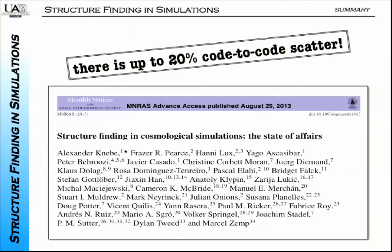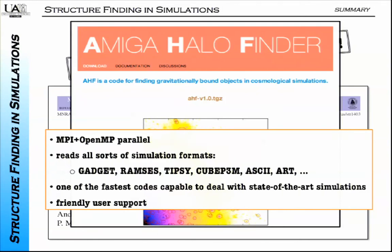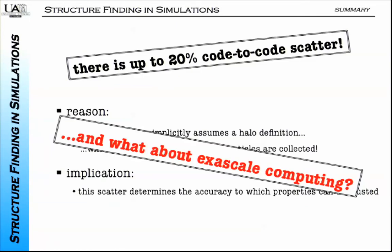You might ask again, which is the right one? Let me finish by saying I'm also a player in this game—I have my own halo finder. It is a publicly open-source, OpenMPI, MPI-parallelized halo finder. It supports all your favorite simulation formats. It is one of the fastest—see the timing table in the appendix of the review paper. It is one of the fastest and most user-friendly tools available. You are still welcome to use it.